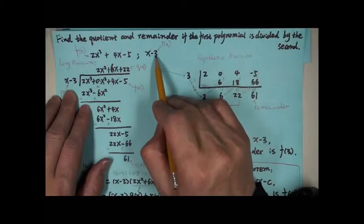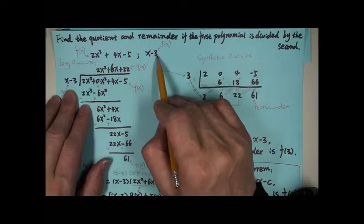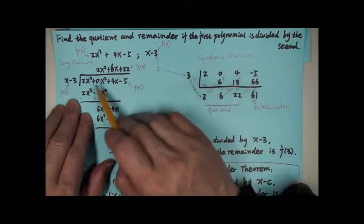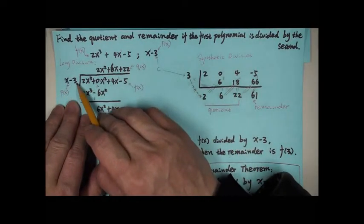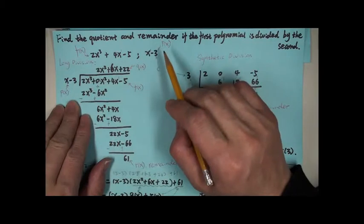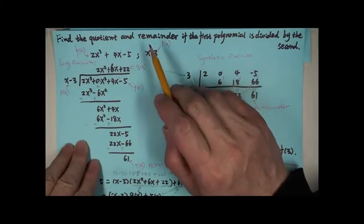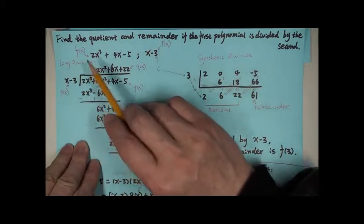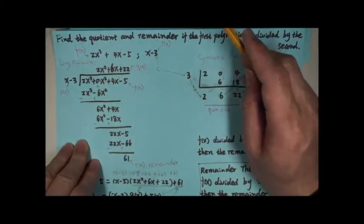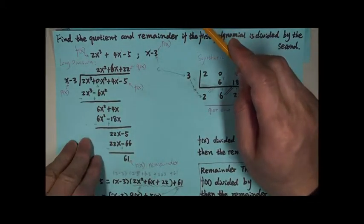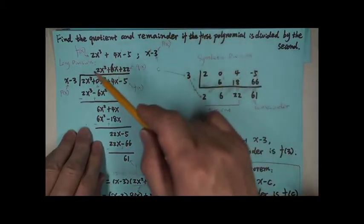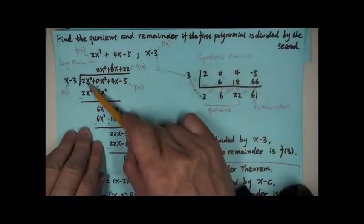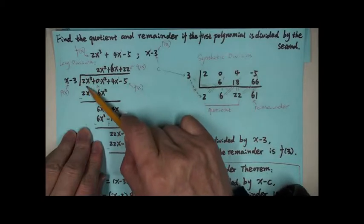Divide by x minus 3. That's our p of x — put it right here. So let's do this one by long division. In long division, the goal is to eliminate the highest term.